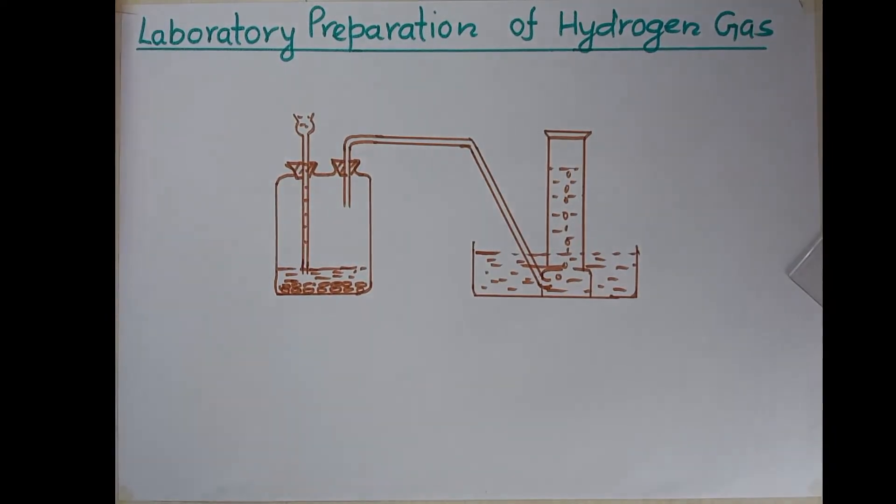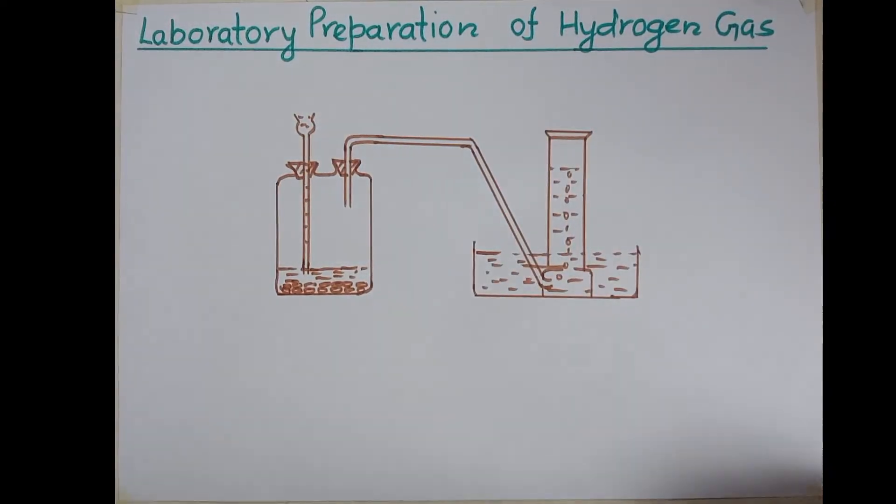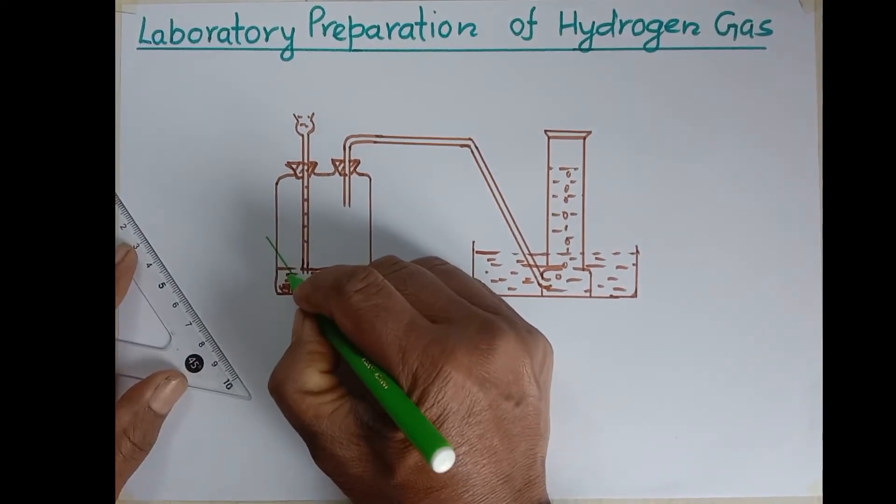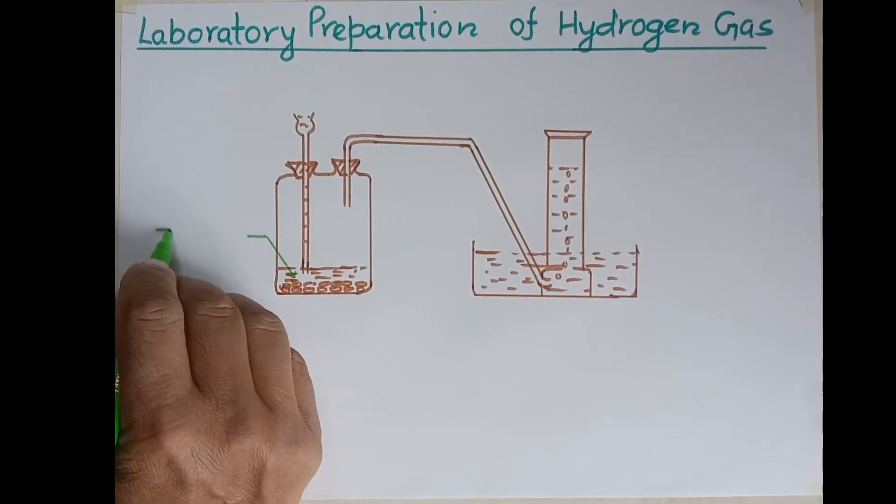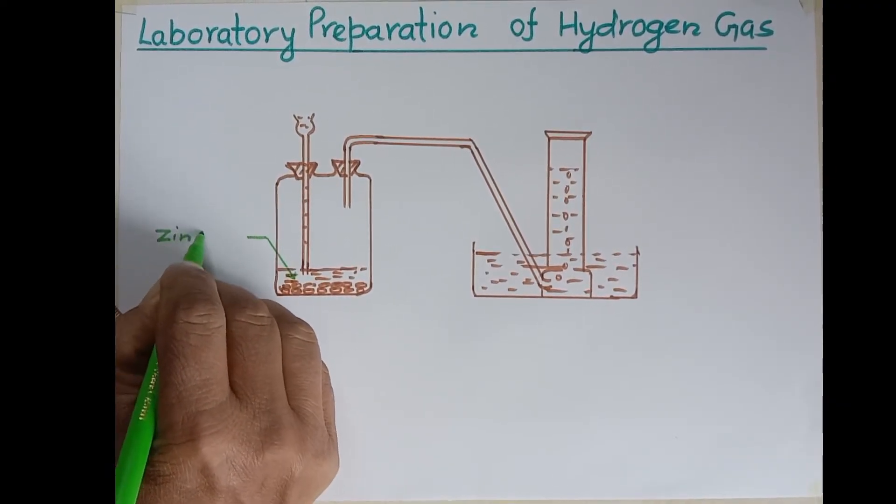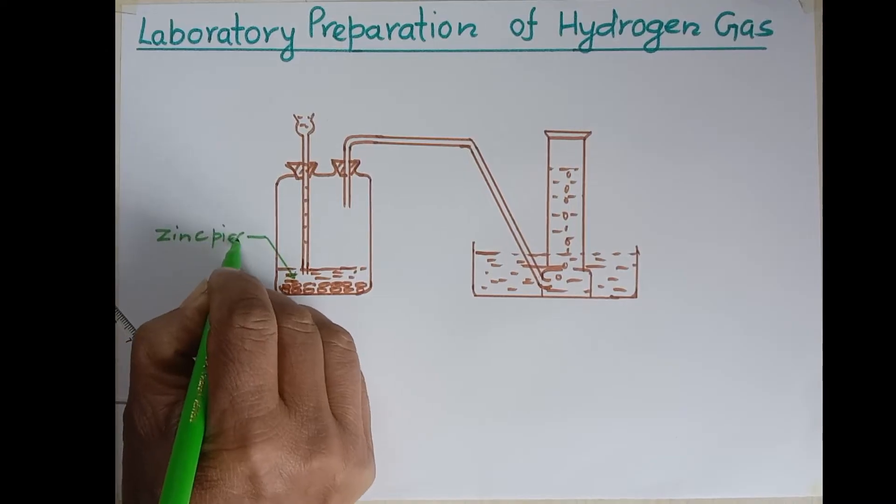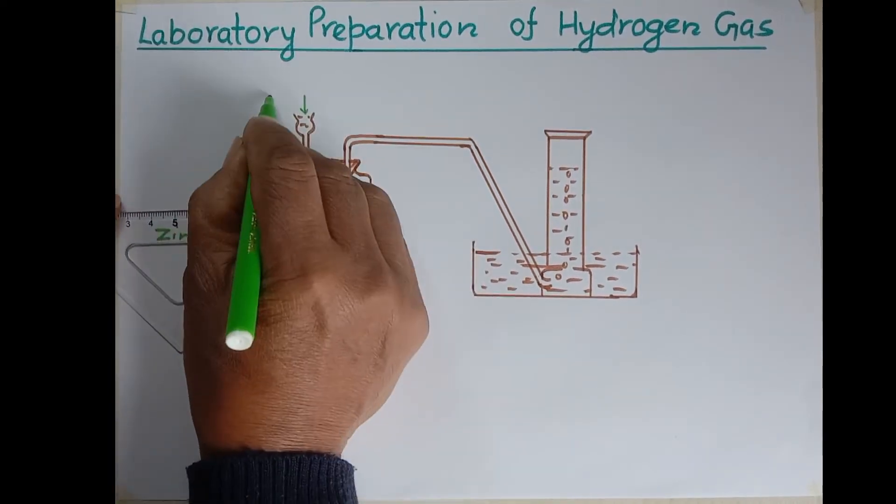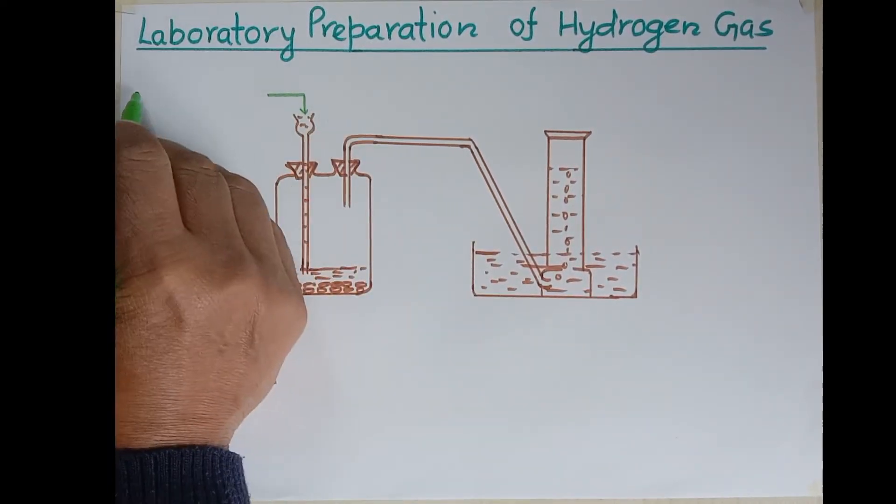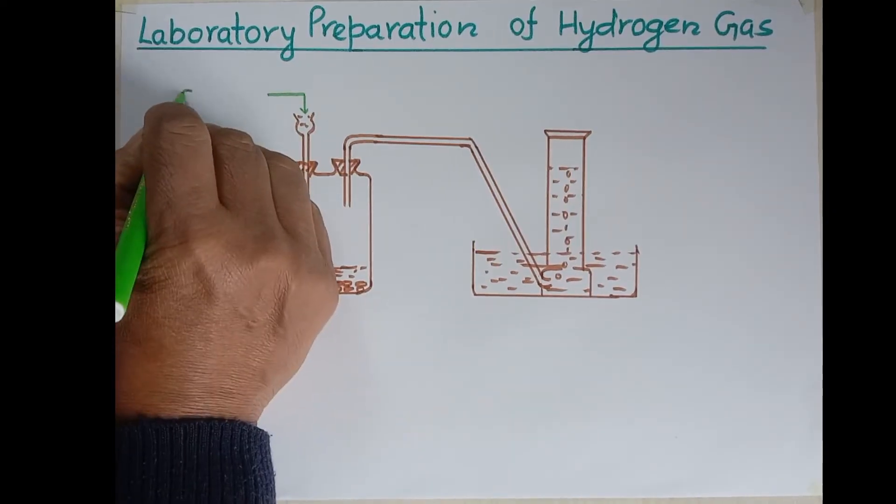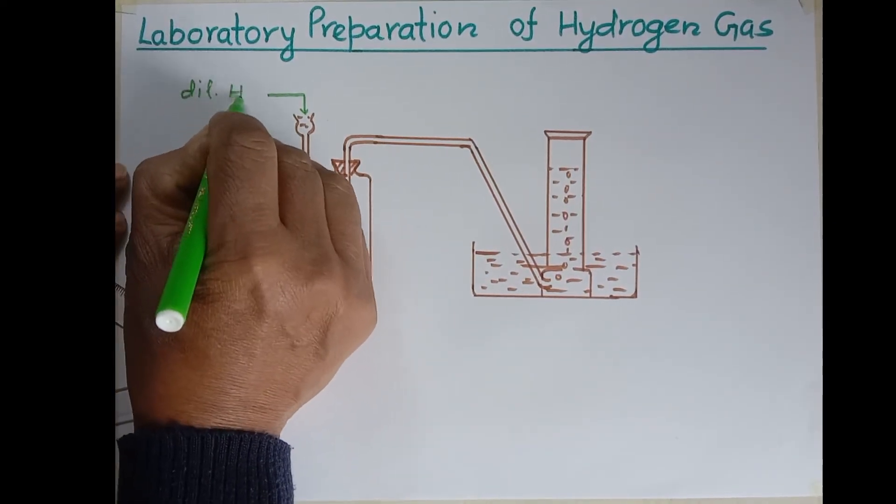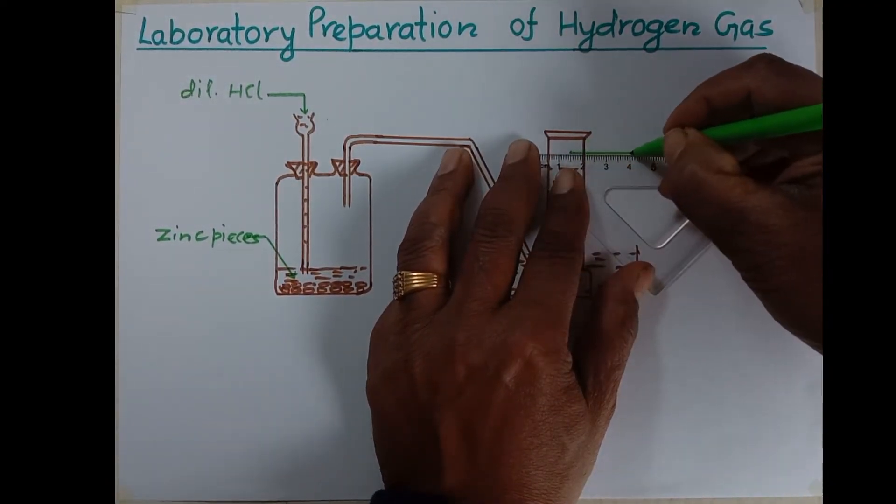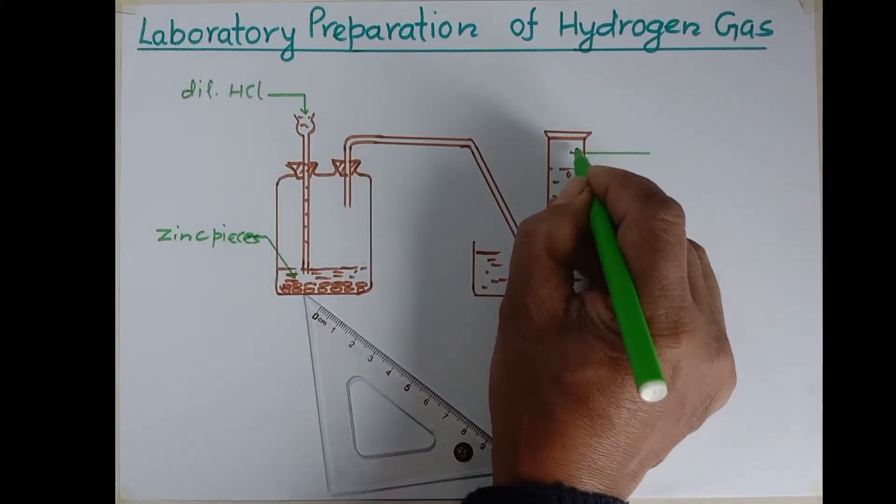This is the diagram, but without the label diagram doesn't exist. That's why I want to label this. Which chemical substance is used? This is zinc pieces. And hydrochloric acid is filled in it. This is dilute hydrochloric acid. And what gas comes after the reaction which is being collected here? This is hydrogen gas.